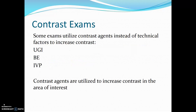Some exams utilize contrast agents instead of technical factors to increase contrast. Examples include an upper GI, a BE (also known as a lower GI), and an IVP. The contrast agents are utilized to increase contrast in the area of interest.